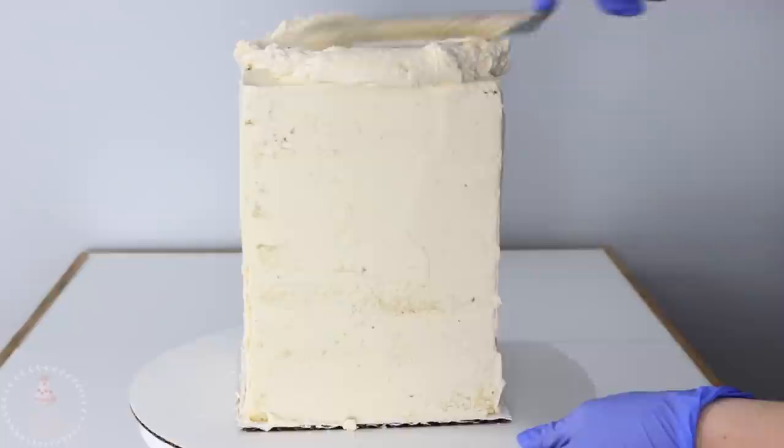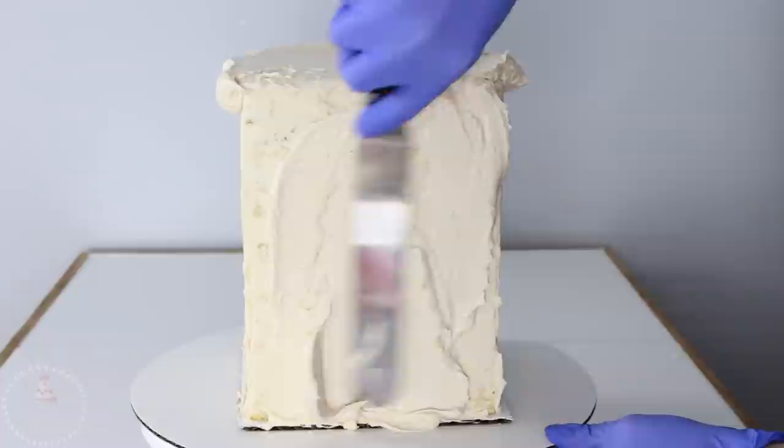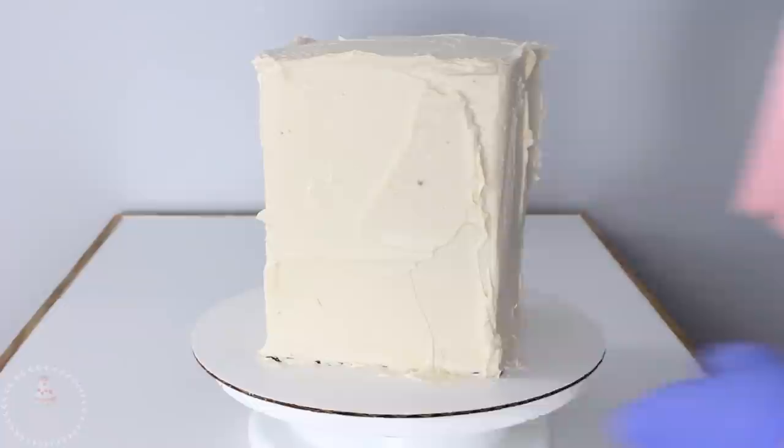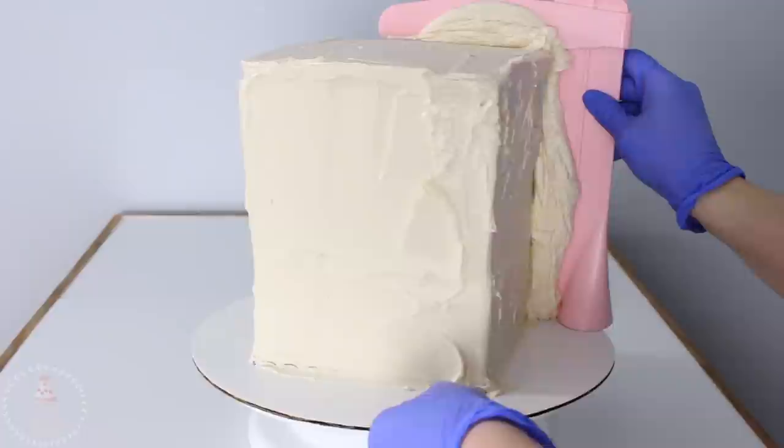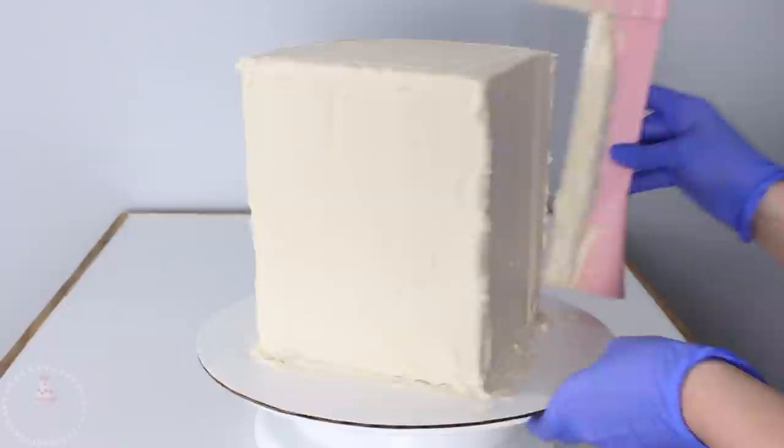When I could touch my finger to the buttercream and it was nice and firm, I added another thick layer all around the outside of my cake. I'm going to be using my profroster today just because it makes it really easy for me to get a nice level top and straight sides. You can just use a bench scraper for this, you don't need the profroster, not sponsored.